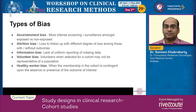Cohort studies are susceptible to bias. One type is surveillance bias. Suppose you are conducting a cohort study of smokers versus non-smokers. If smokers are subjected to high-resolution CT scans at five-year intervals as screening while non-smokers only get a simple chest X-ray, you will pick up more cancers in smokers — and this higher detection rate may not really be related to smoking but simply to how you perform your surveillance.